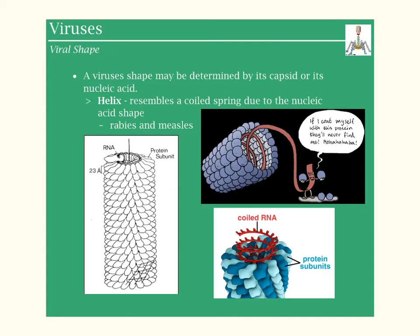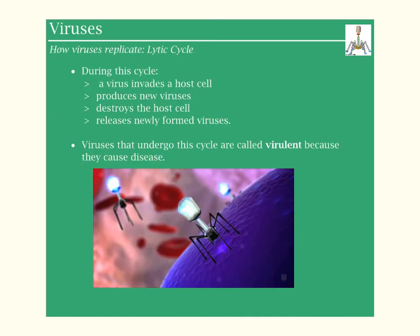Another shape of virus is a helix or helical virus. Rabies and measles are examples — you can see how this is basically a spring, very similar to a suspension coil in a car. So that just speaks to its shape. We have three different shapes: enveloped like HIV, icosahedron like polio, and helix like rabies.